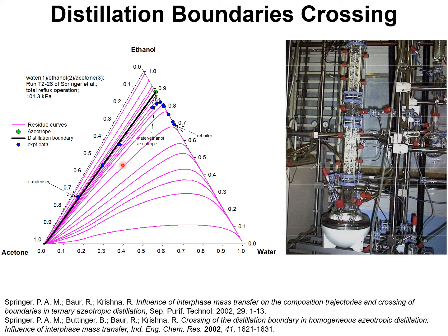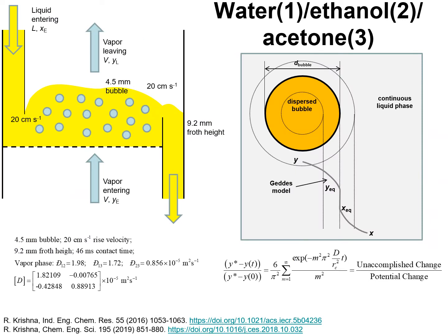Under the actual conditions, as we move up the column from the re-boiler to the condenser, the compositions cross the distillation boundary. To explain and rationalize this boundary crossing effect, we set up a simple model for the distillation tray in the Springer experiments.